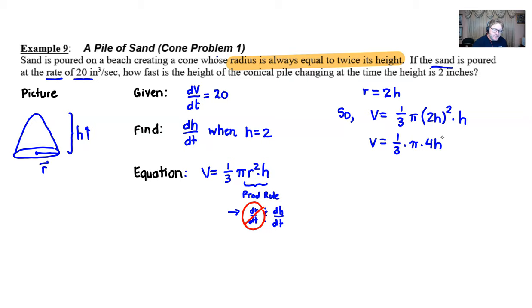You're going to want to do yourself a favor here. Don't take the derivative yet. You want to simplify this thing first. You're going to have one-third pi, the 2h squared is going to become 4h squared, and then we multiply by the h. Then we can clean it up one last time: four-thirds pi and then h cubed.